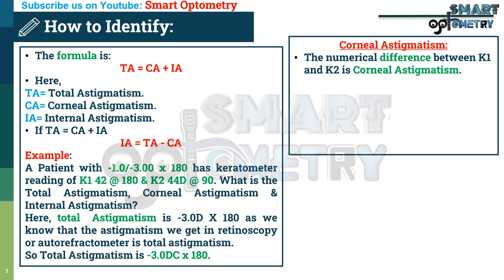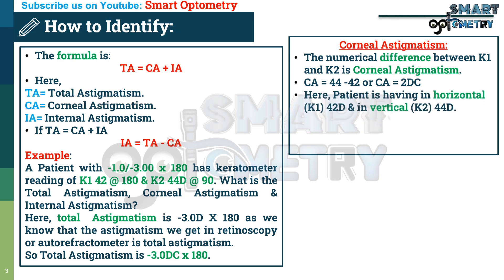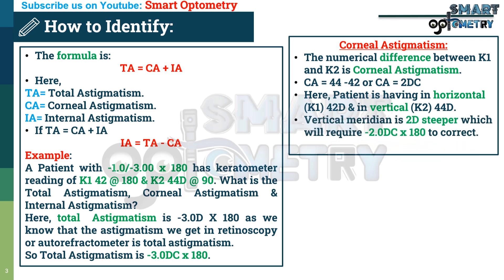The numerical difference between K1 and K2 is corneal astigmatism. So corneal astigmatism = 44 - 42 = 2 D cylinder. The patient has 42 D in the horizontal meridian and 44 D in the vertical meridian. The vertical meridian is 2 D steeper, which requires -2.00 D cylinder at 180° axis. So corneal astigmatism is -2.00 D at 180° axis.